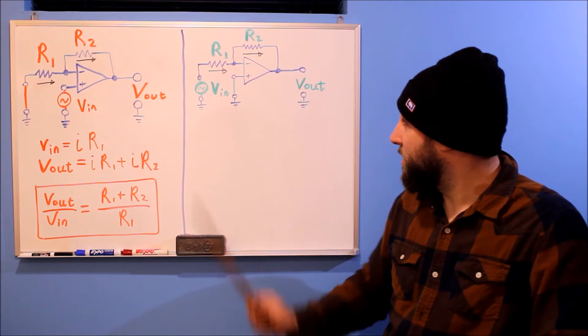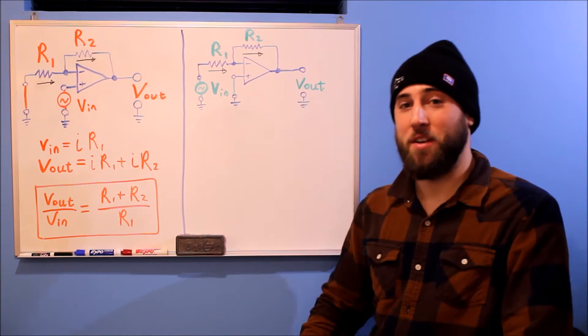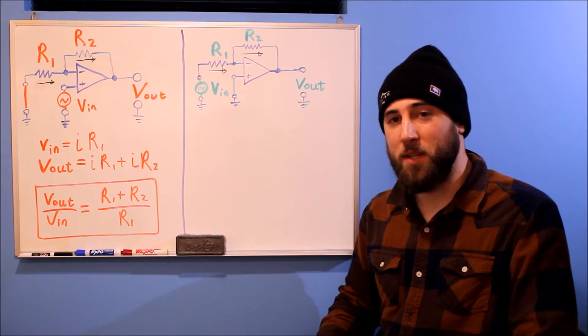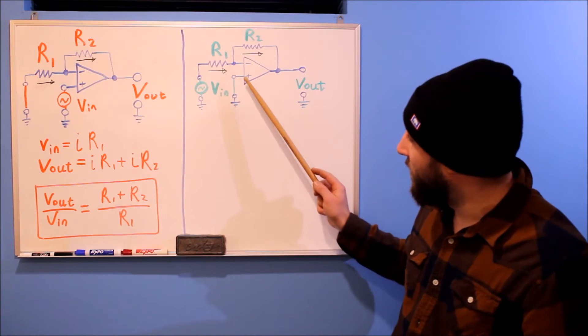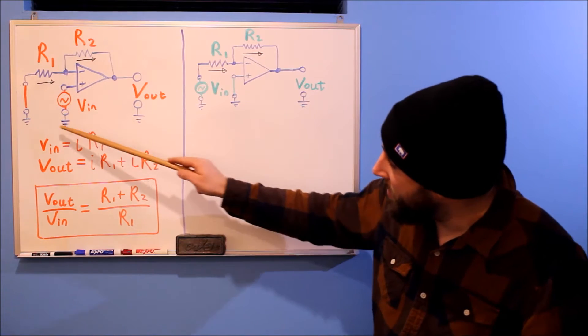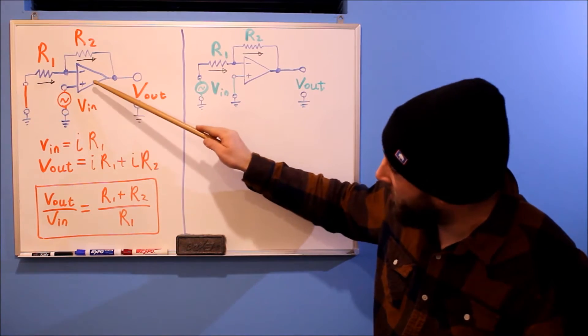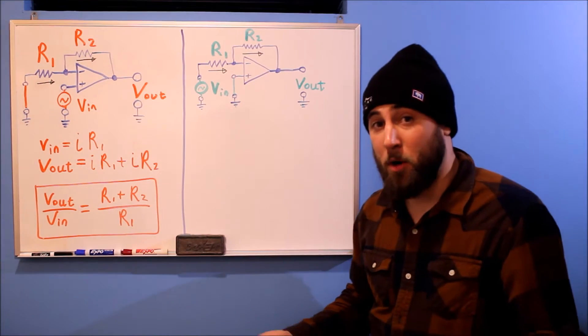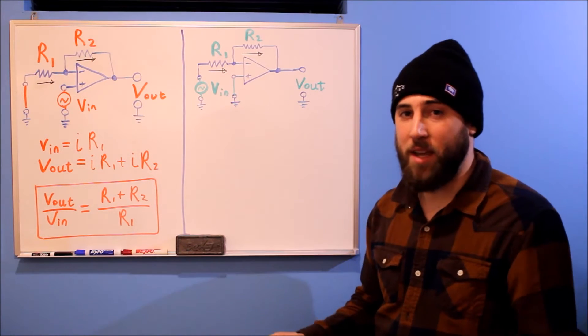Anyways, this is, in fact, an inverting amplifier, and the only difference between these two circuits are the placement of VN. So, VN is tied to your non-inverting input, appropriately for the non-inverting amplifier.